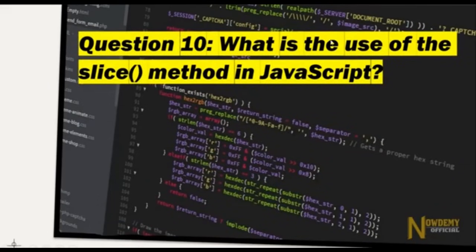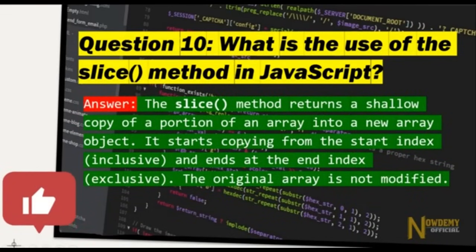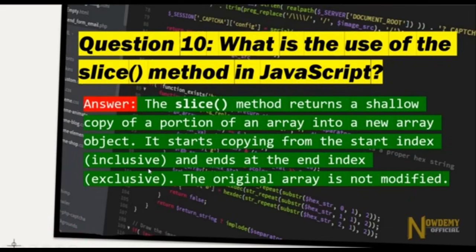Question number ten: What is the use of the slice method in JavaScript? The slice method returns a shallow copy of a portion of an array into a new array object. It starts copying from the start index (inclusive) and ends at the end index (exclusive). The original array is not modified.